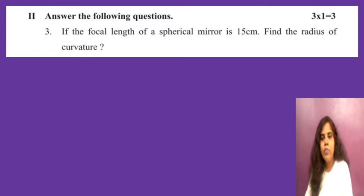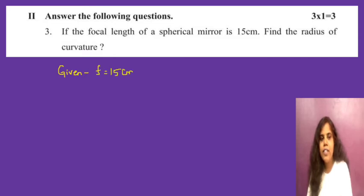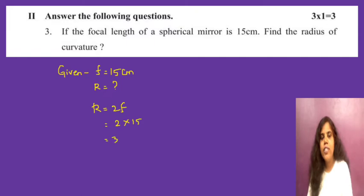Next: if the focal length of a spherical mirror is 15 centimeter, find the radius of curvature. Given focal length F is 15 centimeter. The formula is R equals 2 into F, so R equals 2 into 15, which gives 30. The radius of curvature is 30 centimeter.